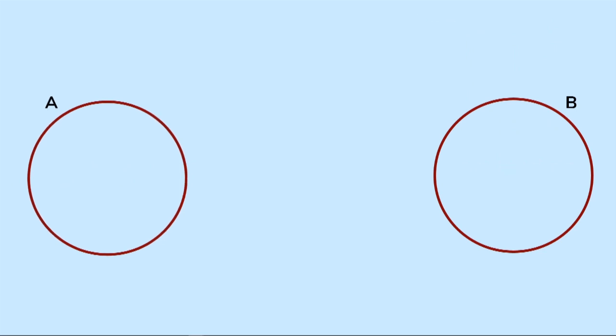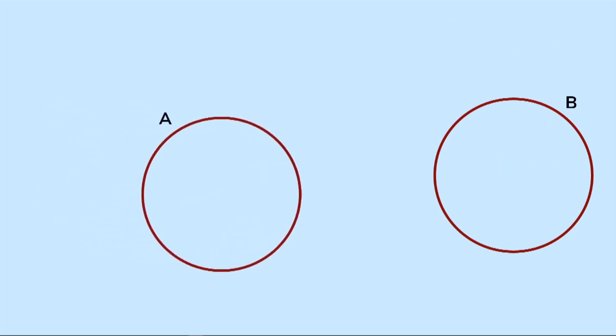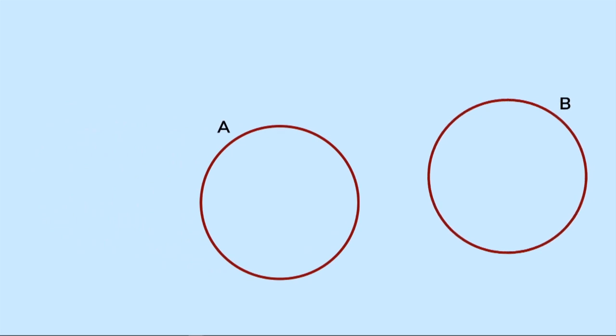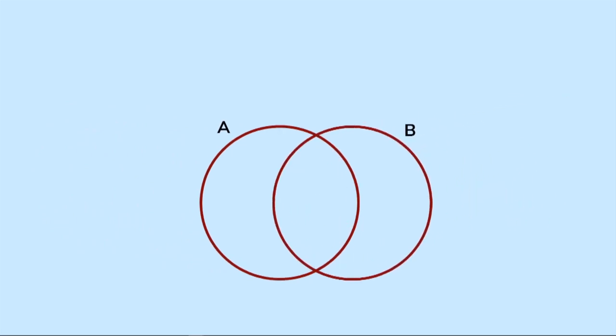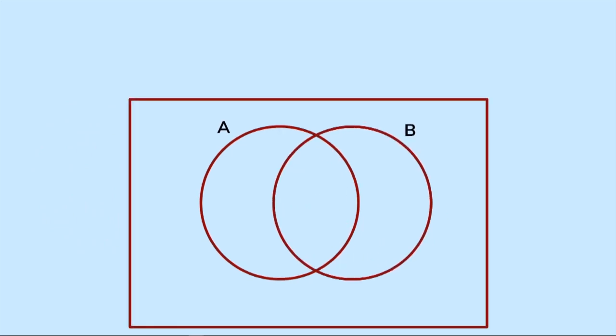The beauty of Venn diagrams is that circles representing different sets may sometimes overlap, because there could be some elements of those sets that are in both of the circles.